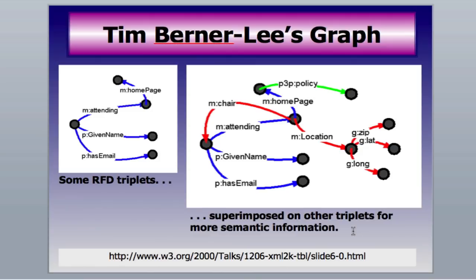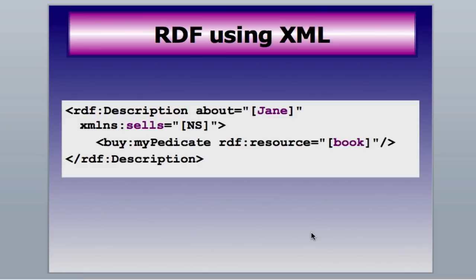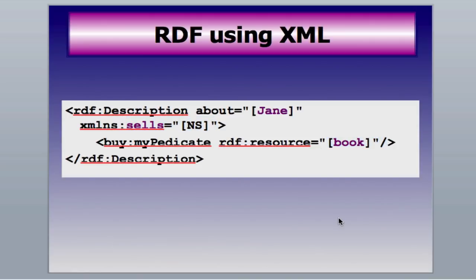Here's how it looks to a computer. We use a specific XML structure with the RDF namespace. You can see that the description tag is the root, set about Jane. We set up a namespace for sells and a resource for book. Now we've codified it into machine language so a computer can analyze this triplet and use it to compare and show relationships with other triplets.